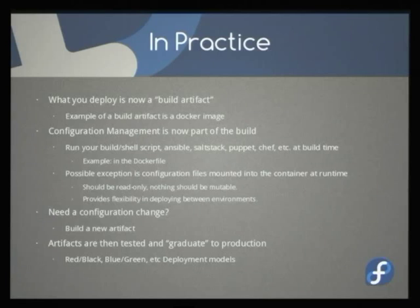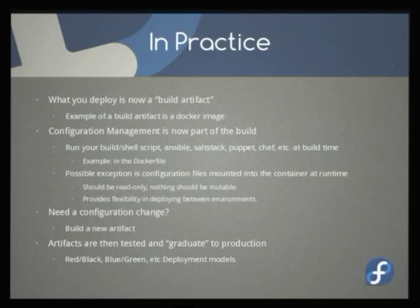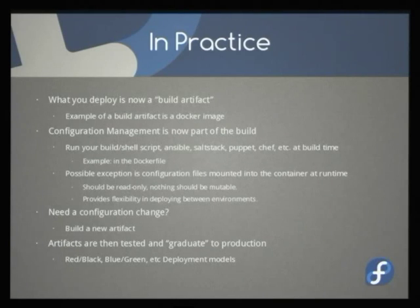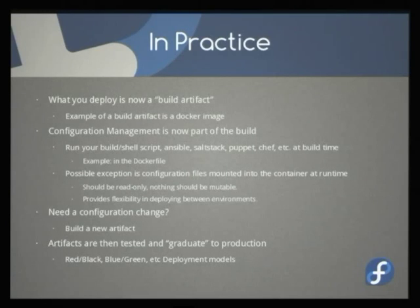What we effectively deploy is a build artifact. We no longer deploy in the traditional sense and have automated configuration management jobs run. You deploy a build artifact, and your build artifact could be a container image. If you take your Docker image, have your Dockerfile run and do its thing, at the end you have this image — you can distribute that image and start the service. There should be no required added configuration management. You can put your configuration management in the build time, running it inside the context of the container image build.